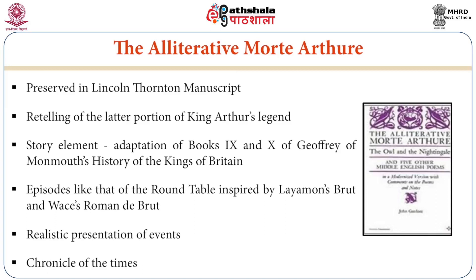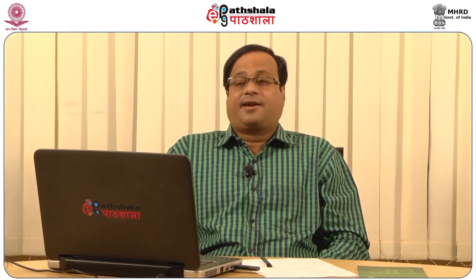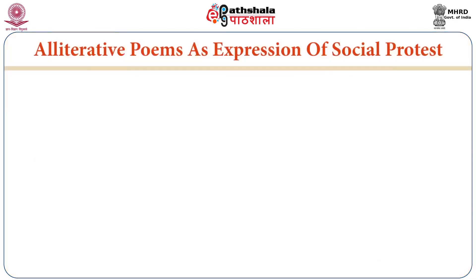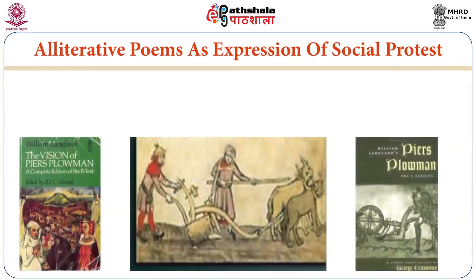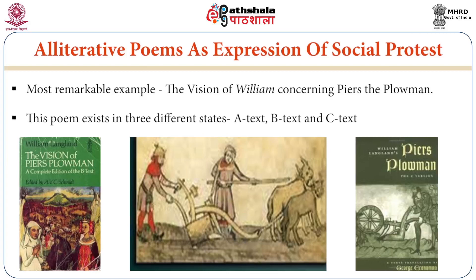What is the implication of the alliterative poems? Critics often say they are expressions of social protest. Under this head, the most remarkable example is The Vision of William Concerning Piers the Plowman. It is by far the most exemplary representative text of the age. This poem exists in three different states: A text, B text, and C text.